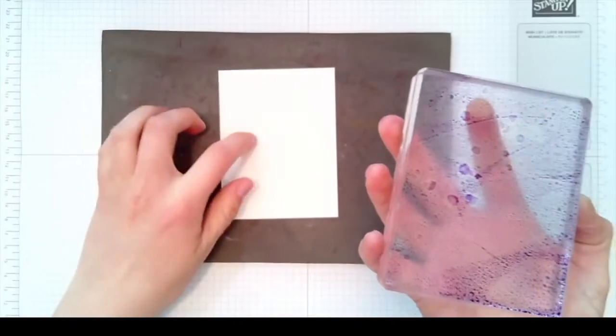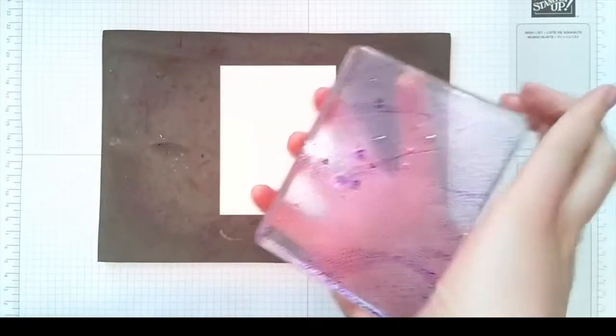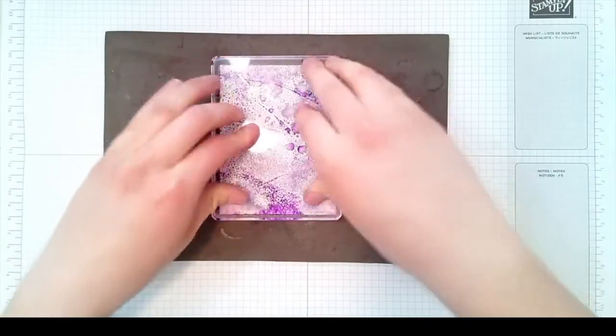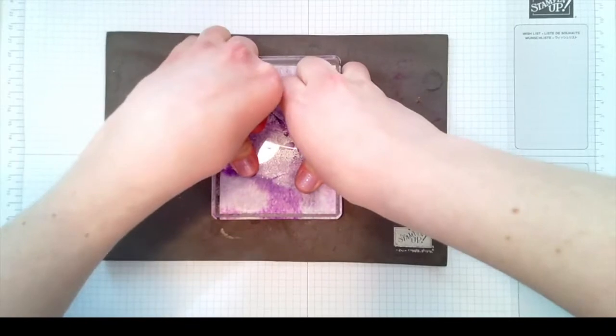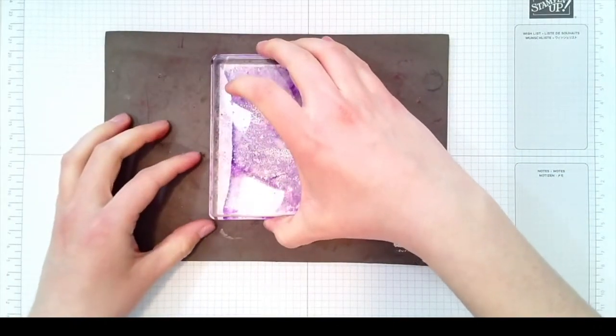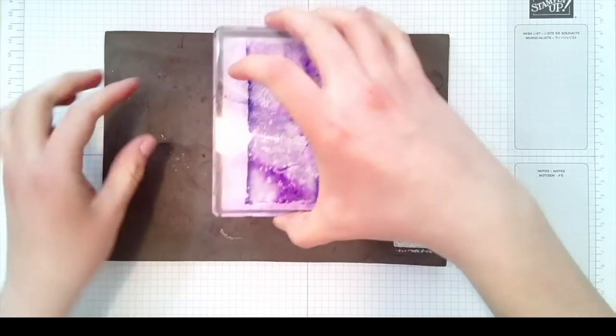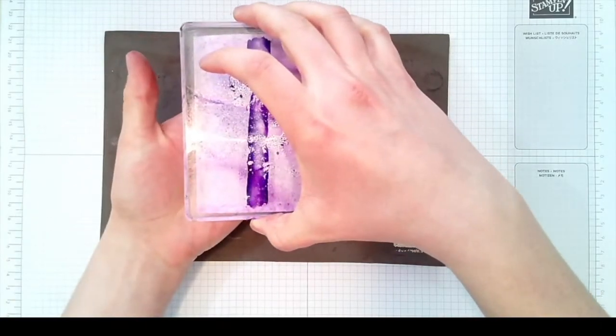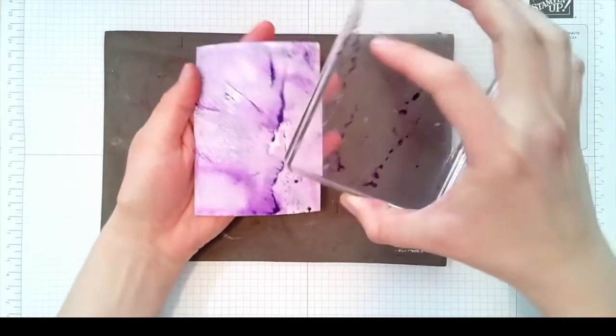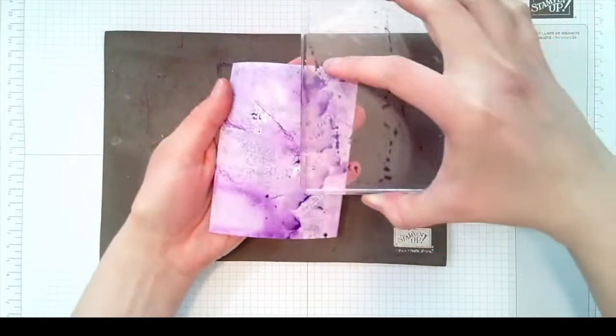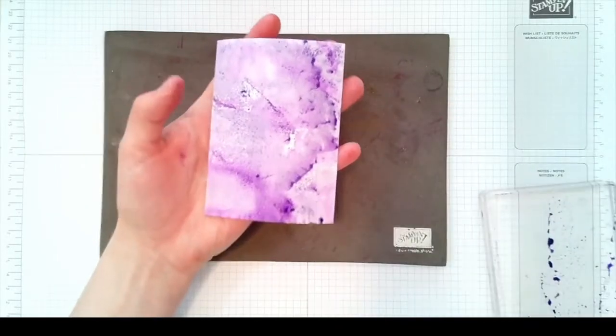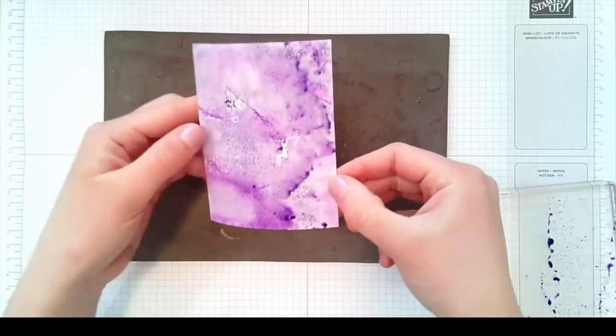Take your cardstock here, your shimmery white, and you're gonna stamp that right over top. Push real hard to get all the water and ink transferred. Then carefully it will kind of release itself. If you get a little extra water you can just stamp there and get it all smeared around for a really cool background.